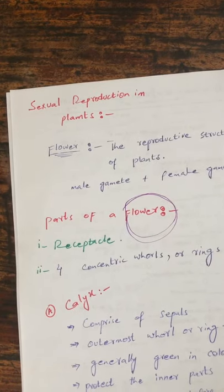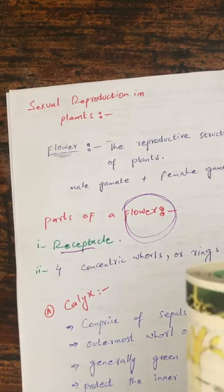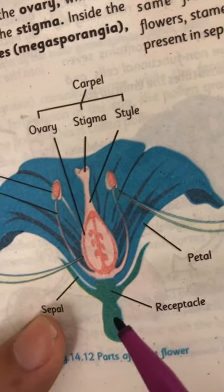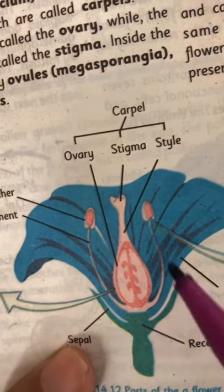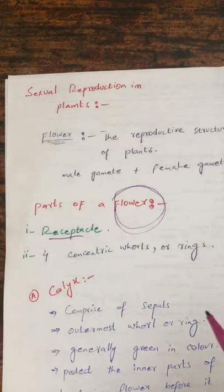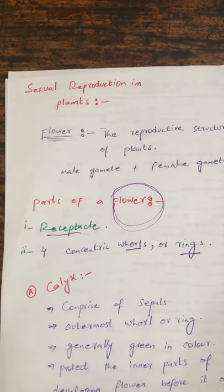The flower is made up of different parts. The first part is the receptacle, which is the swollen part of the flower. Remember, we can divide the flower into different walls or rings. It is made up of different concentric walls or rings.